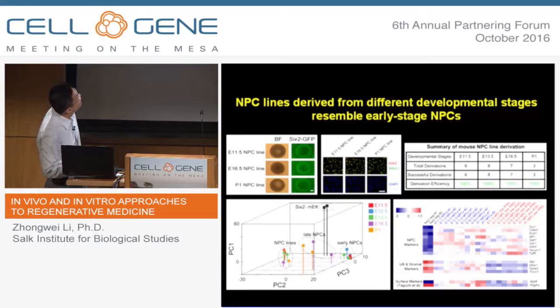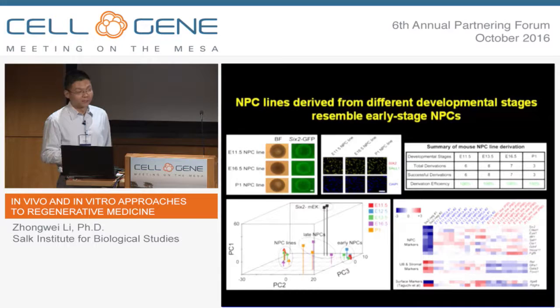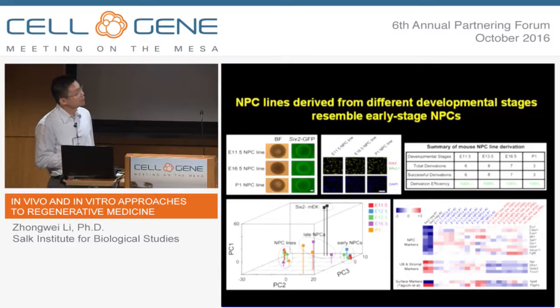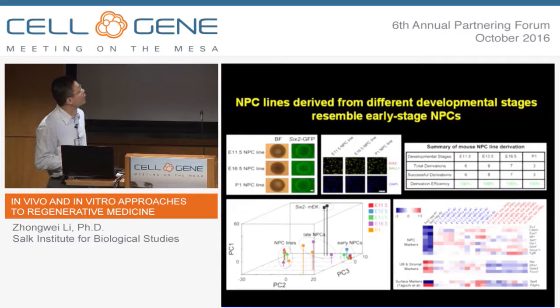The nephron progenitor cells are in a condensed mesenchyme state in vivo. I was thinking to mimic this in vivo aggregated state, so I employed a 3D aggregate culture condition to screen different optimal culture media. Based on this idea, I devised a screening platform. First I chose the Six2-GFP mouse embryos for better observation. The Six2-GFP strain was also generated by Dr. McMahon's lab.